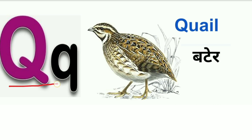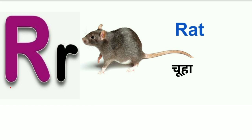Q for quail. Quail means bater. R for rat. Rat means chuha.